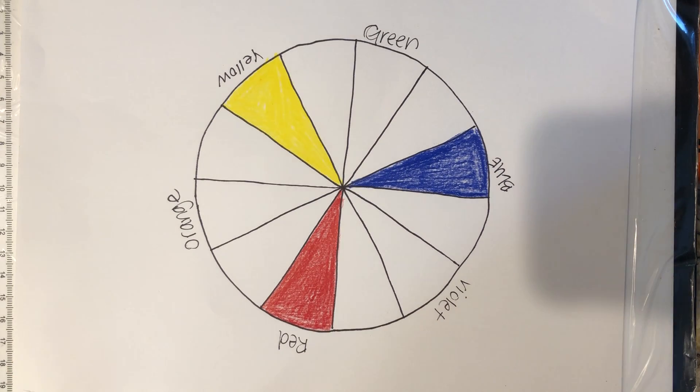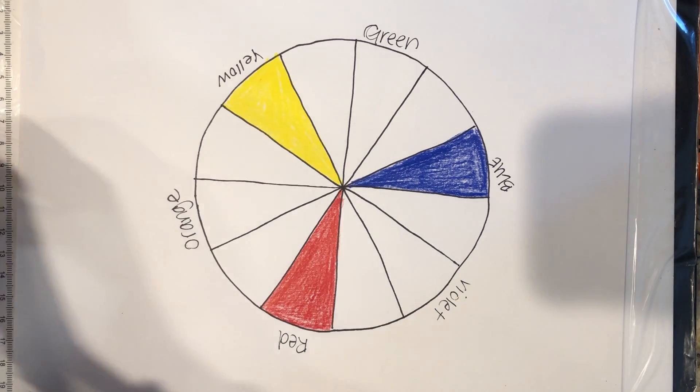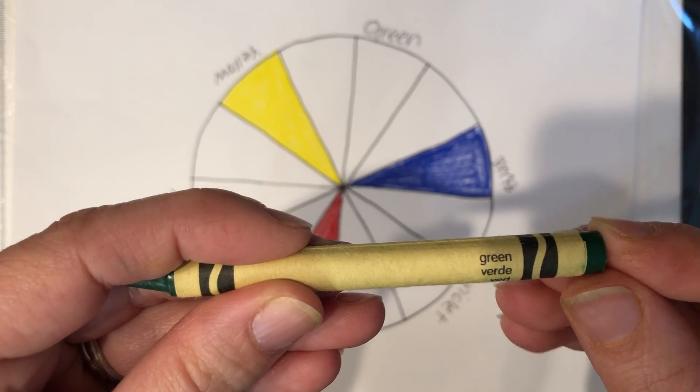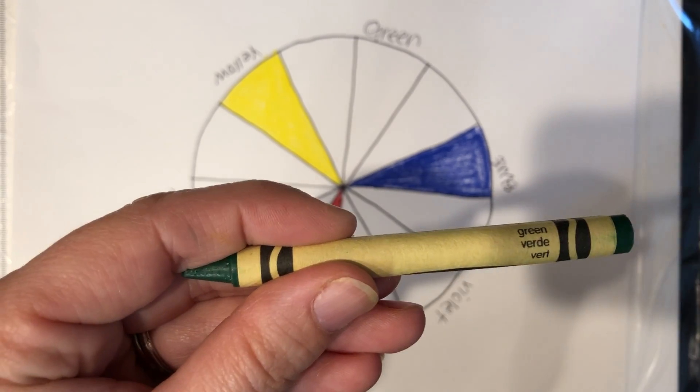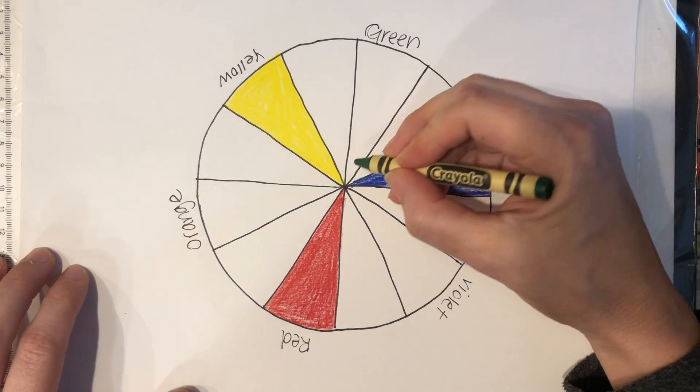Now we're going to go ahead and color those in. If you have green, orange, and violet, you can go ahead and color those in with your color out of the box. I'm going to look and see if I have a pure green. This one says it has three colors: green, verde, and vert—English, Spanish, French. I'm just going to color that one in.